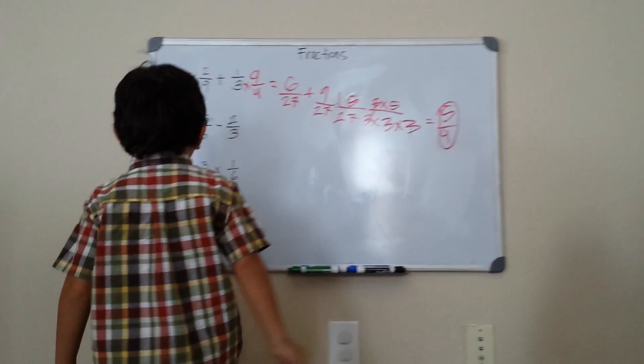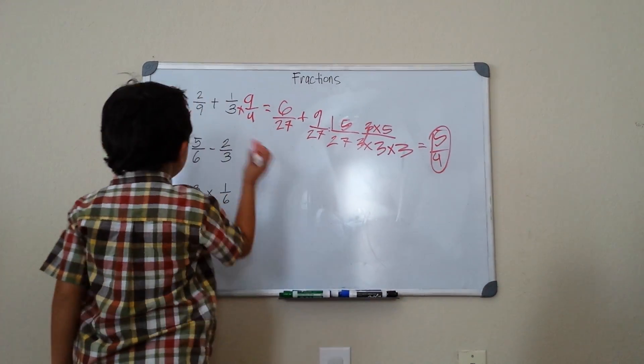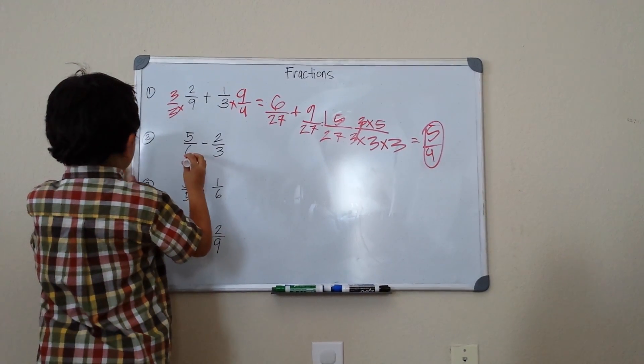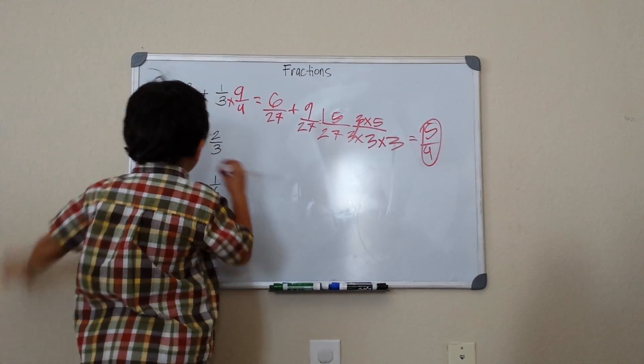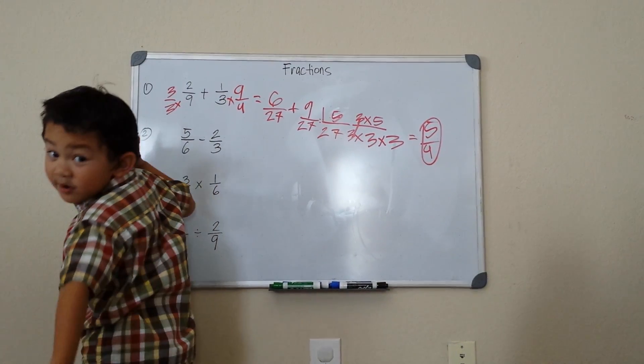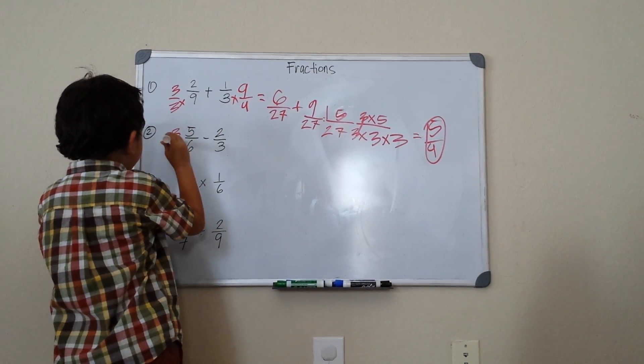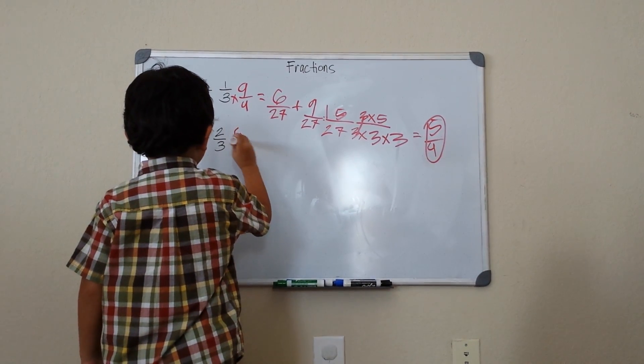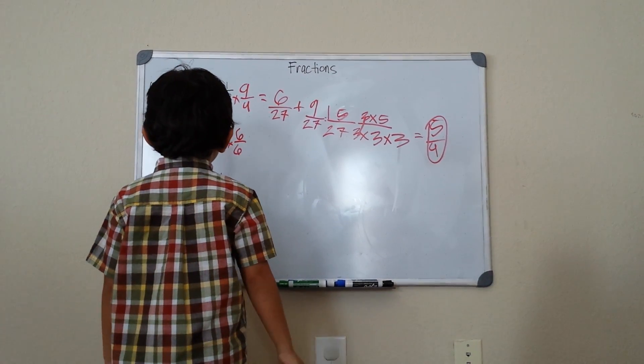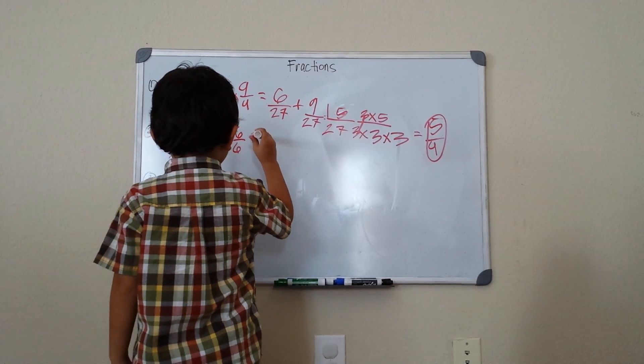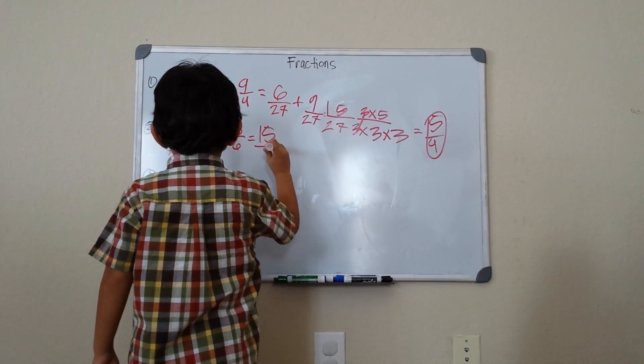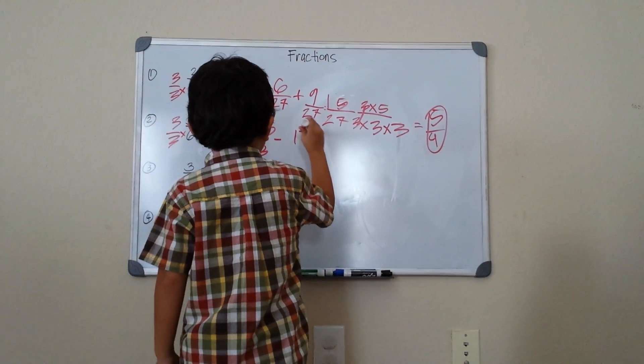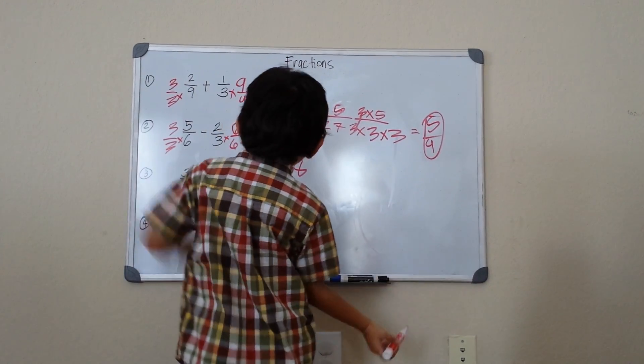5/6 minus 2/3. We need to get the same denominator, so multiply by 3/3 to get 6. So 3 times 5 will give me 15/18, minus 2 times 6 will give me 12/18. They are the same denominator now.